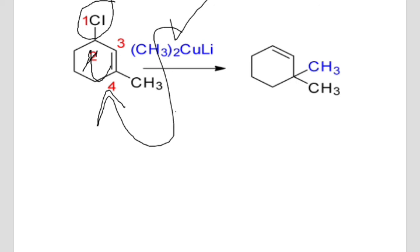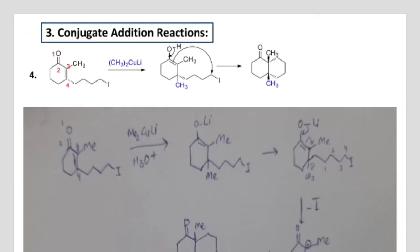Chlorine will be released and this bond will shift, and the methyl group will be attached. Now in this section, methyl — which is the Gilman reagent — will attack on the fourth position. This bond will shift and move toward the oxygen; oxygen acquires a negative charge and lithium attacks on it to form an alkoxide bond.